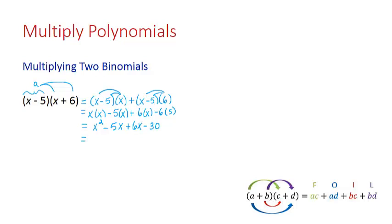When we combine like terms, we get x squared plus x minus 30.